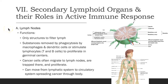The lymph node filters lymph — substances are removed by phagocytosis through macrophages and dendritic cells, or B and T cells are stimulated to proliferate within the germinal centers of the lymphoid follicles. Cancer cells may migrate to the lymph nodes, become trapped and proliferate, then move from the lymphatic system into the circulatory system to spread cancer throughout the body — this is called metastasis, meaning the cancer has moved from the primary site to a further location.